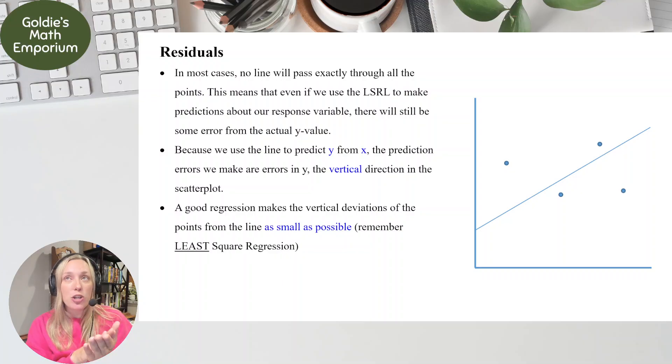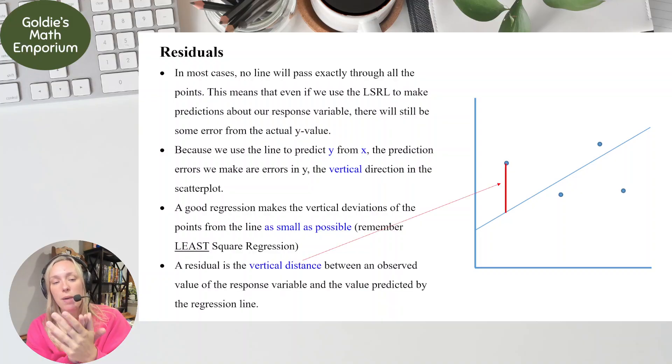A good regression line makes those vertical deviations, those vertical errors, as small as possible. Remember our method of least squares regression is to take those vertical distances, square them, and then minimize, minimize that sum. That's with least squares regression. So our least square regression line makes those vertical distances as small as possible.